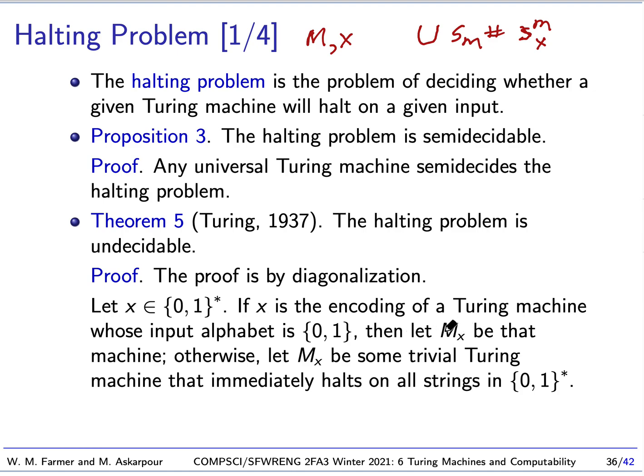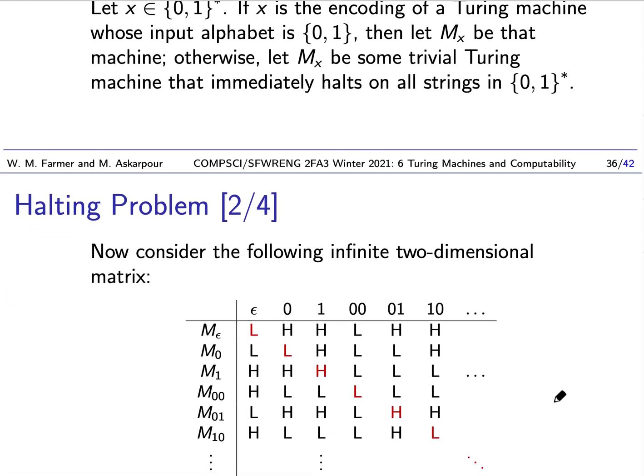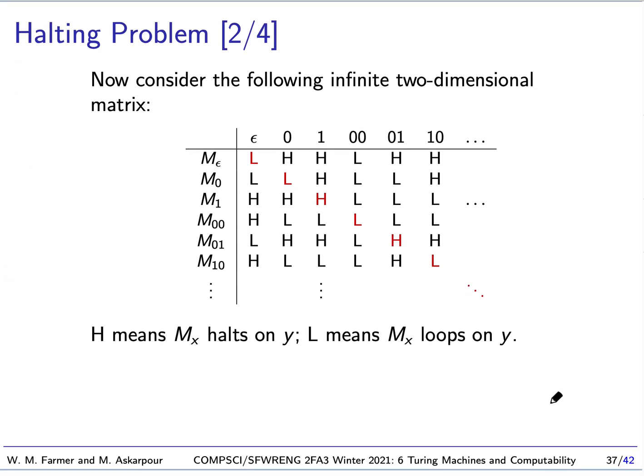This string may be an encoding of a Turing machine. If it is, then we will say MX is that Turing machine. So if X encodes a Turing machine, MX is that machine. If it's not an encoding for a Turing machine, then we'll say MX is some trivial Turing machine that immediately halts in all strings. So you give it any string, it just halts immediately.